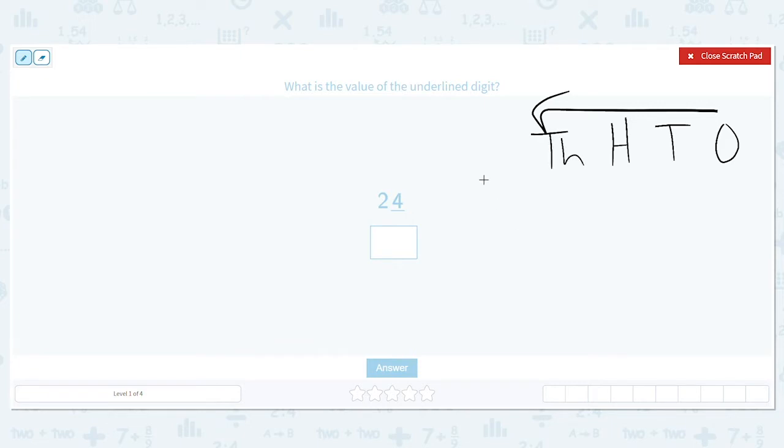We have 24. I'm going to line it up. We want to know about the four, so the four is in the ones place. That means it has a value of four.